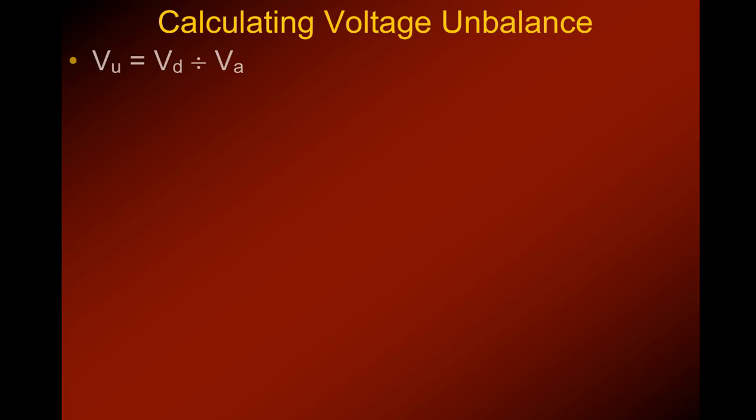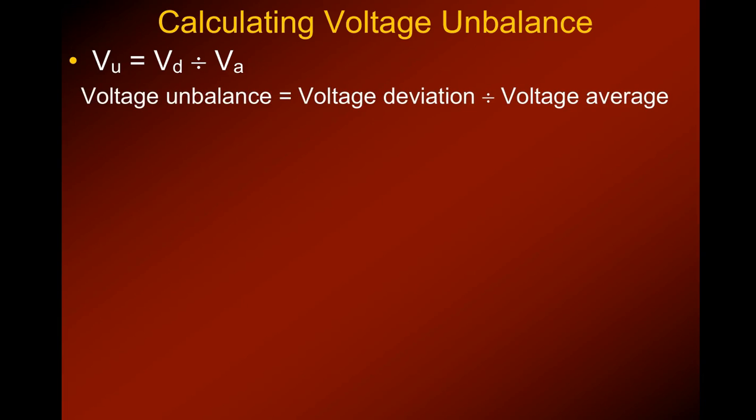The way that you do that is you use the formula, which is represented here. The VU stands for voltage unbalance, which equals the voltage deviation divided by the voltage average. So let's take a look at an example.